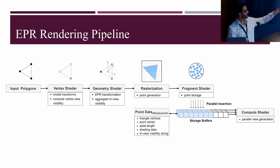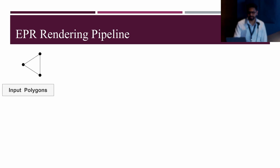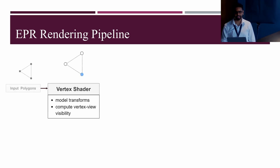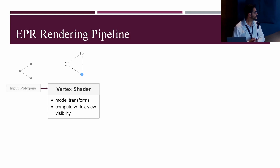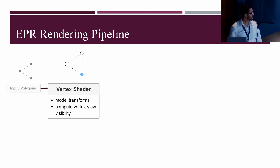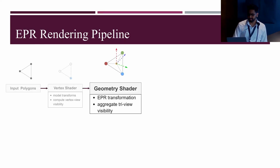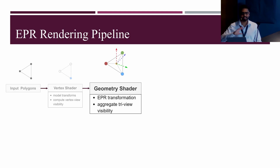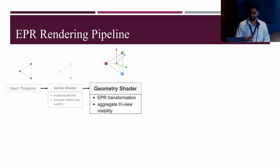Coming to our EPR pipeline: input is a polygon. In the vertex shader, we process the vertices, apply model transformation, and conservatively compute triangle-view visibility for each view, creating a bit string used later in the pipeline. In the geometry shader, we set up the triangle for view-independent rasterization at a multi-sampling rate needed for the triangle and project it into the point sampling buffer. The EPR sampling rate ensures every eye buffer pixel is sampled. Note that one sample may cover several off-screen buffer pixels.